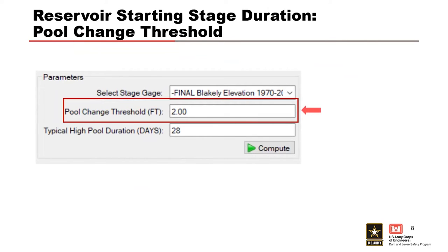The next parameter is the pool change threshold, which represents the maximum rate of rise in the pool per day. Pool changes that exceed this threshold are identified as flood events, and the stage data is excluded from the analysis to develop the antecedent reservoir stage duration curves. To estimate this threshold, look at a few years where you didn't have a flood, or where the reservoir was operating under relatively normal conditions, and see how quickly the pool changes per day. Then look at a couple of flood events and see how rapidly the pool rises — that will help you hone in on this number.